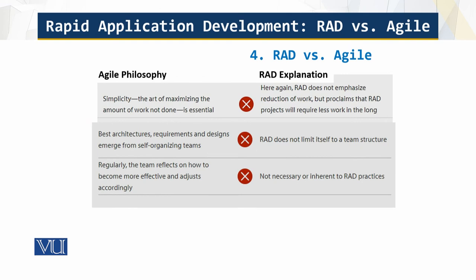Finally, Agile values simplicity and maximizing the amount of work not done, but in RAD there is nothing about reducing work. Agile says that the best architectures, requirements, and designs emerge from self-organizing teams, but in RAD it is not about a specific team structure. And Agile teams regularly reflect on how to become more effective, which is not inherent to the RAD practice.